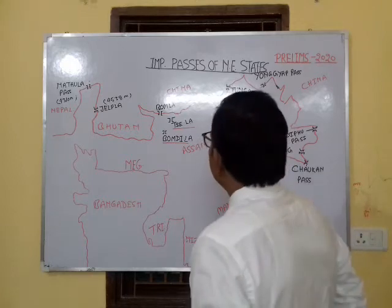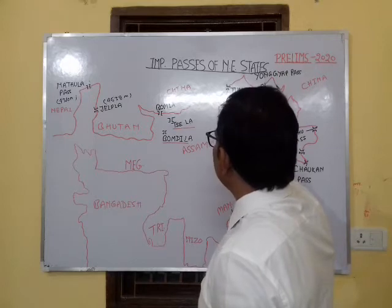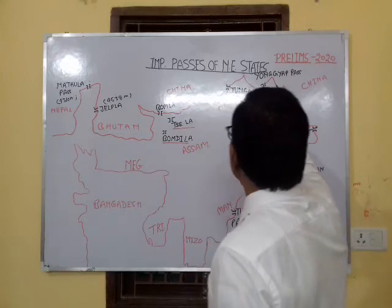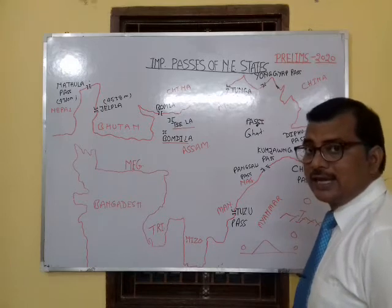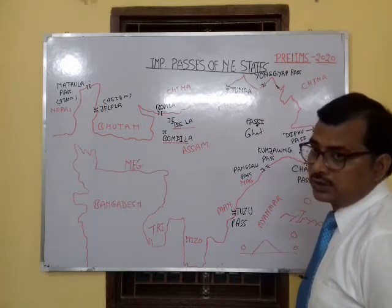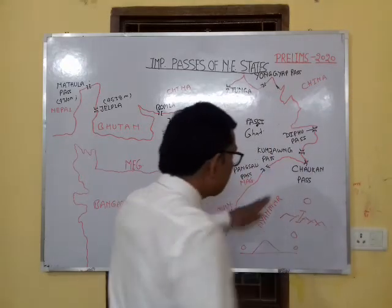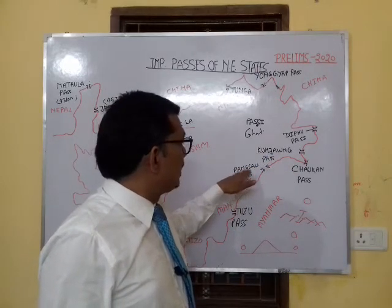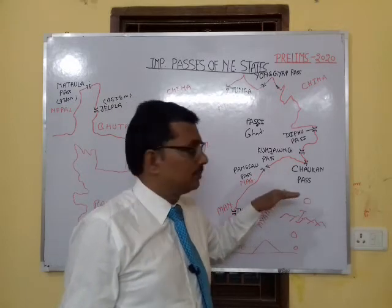Then there is Tawang Pass, situated in Arunachal Pradesh, connecting India to China. After that, Dejiye Pass, Yangtse Aap Pass — also situated in Arunachal Pradesh — connecting Arunachal Pradesh to China. Then Diffu Pass, Chaukan Pass, Kamjawaan Pass, and Pamsu Pass, all situated in the eastern side of Arunachal Pradesh.